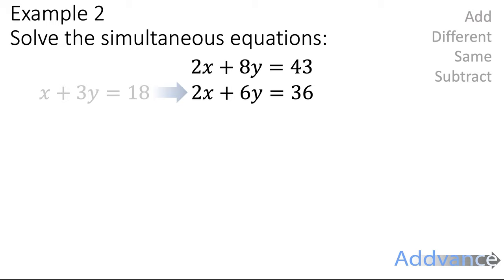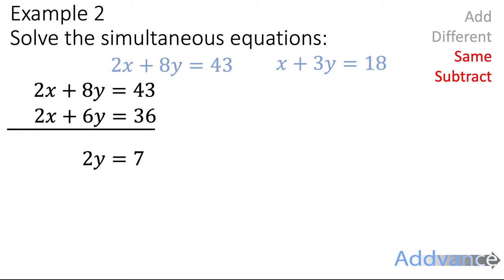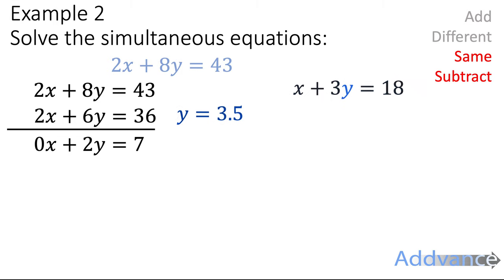Okay, now the 2x and the 2x are both positive. They are the same, so we subtract. 2x minus 2x is 0x. 8y minus 6y is 2y. And 43 minus 36 is 7. I have the equation 0x plus 2y equals 7. The 0x disappears, and I divide by 2. 2y equals 7, I divide by 2, and I get y equals 3.5. And that is the y. I can use that to find the x.